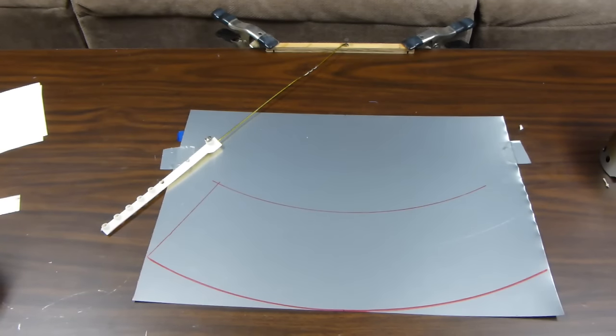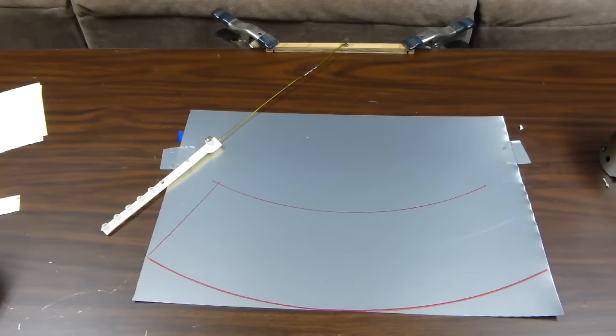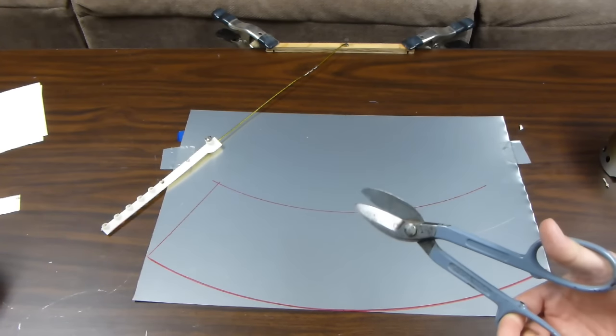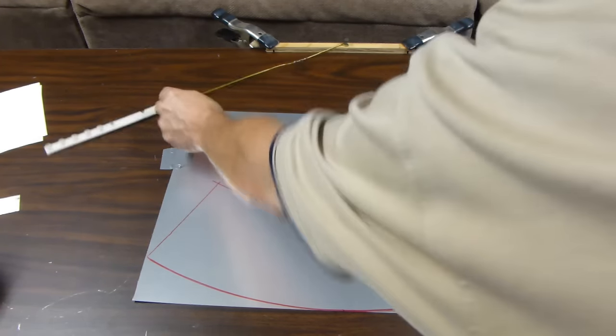Don't worry so much about the one edge. You want a square edge on one end. And you can do that either with a pair of scissors or I've got just an old pair of tin snips. These style work great for this lightweight aluminum, but even a heavy duty pair of scissors will work.